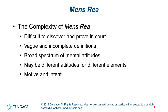Third, mens rea consists of several mental attitudes that range across a broad spectrum, stretching all the way from purposely committing a crime you're totally aware is criminal, to merely creating risks of criminal conduct or causing criminal harms. Fourth, a different mental attitude might apply to each of the elements of a crime. So it's possible for one mental attitude to apply to actus reus, another to causation, another to the harm defined in the statute, and still another to attendant circumstance elements.